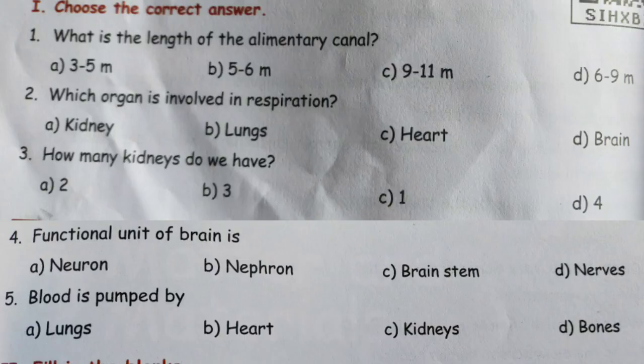Number 3: How many kidneys do we have? Option A: 2. Option B: 3. Option C: 1. Option D: 4. How many kidneys do we have? Very good — we have 2 kidneys. Option A: 2.